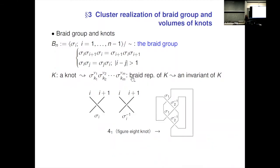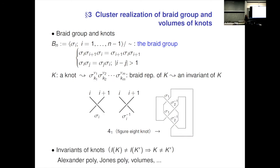By using such a braid representation, many invariants of a knot can be computed. I show the braid representation of the figure-eight knot, which is the simplest hyperbolic knot. An invariant of a knot means that if the invariants are different, then the knots are different — though we cannot go the other direction unfortunately. Historically, the Alexander polynomial is very famous. Besides this, we have many invariants. Today I will mention the Jones polynomial and volumes. A hyperbolic knot is one whose knot complement in S³ has a hyperbolic structure with nonzero volume. It is known that there are infinitely many hyperbolic knots.